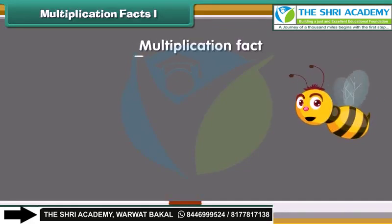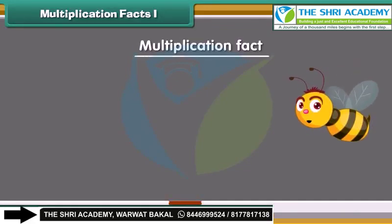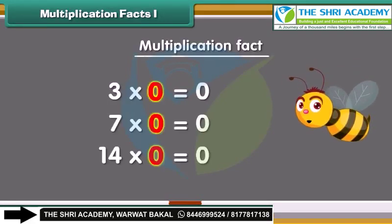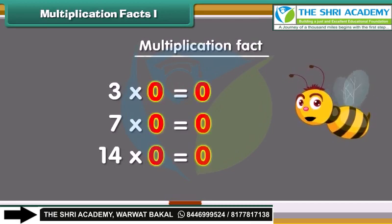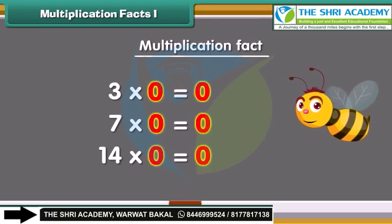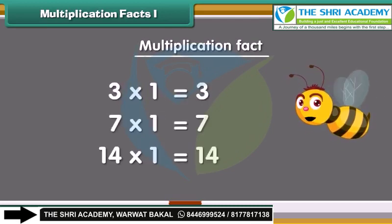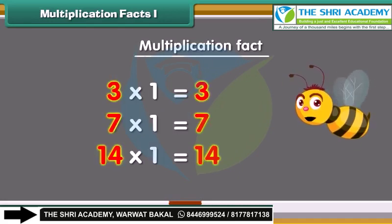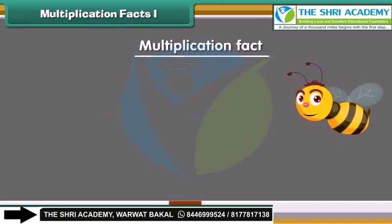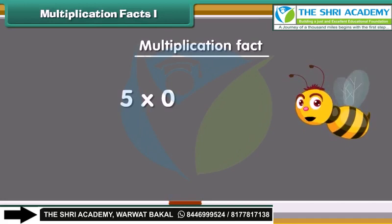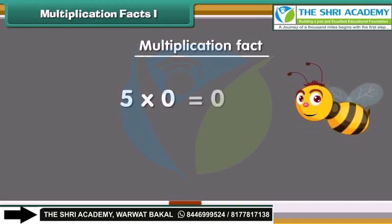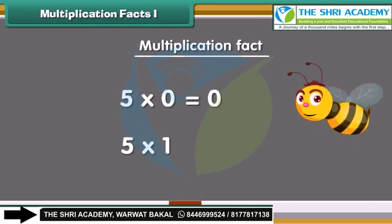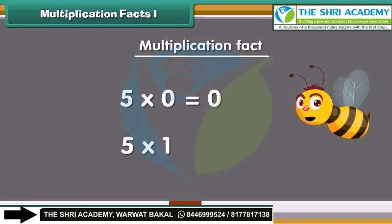We start with some multiplication facts. Any number multiplied by 0 is always equal to 0. A number multiplied by 1 is equal to the same number. For example, 5 multiplied by 0 is 0, and 5 multiplied by 1 is 5.